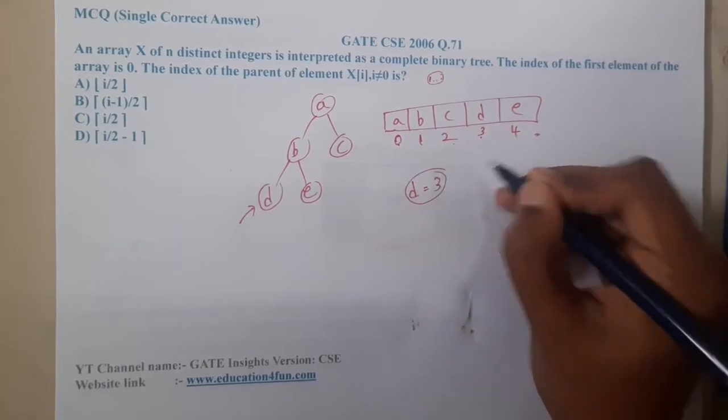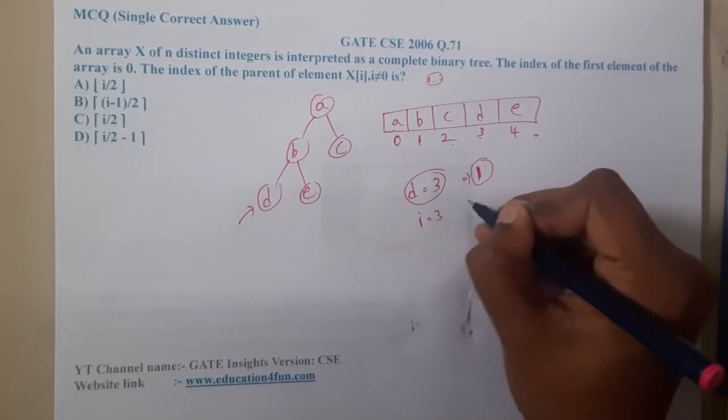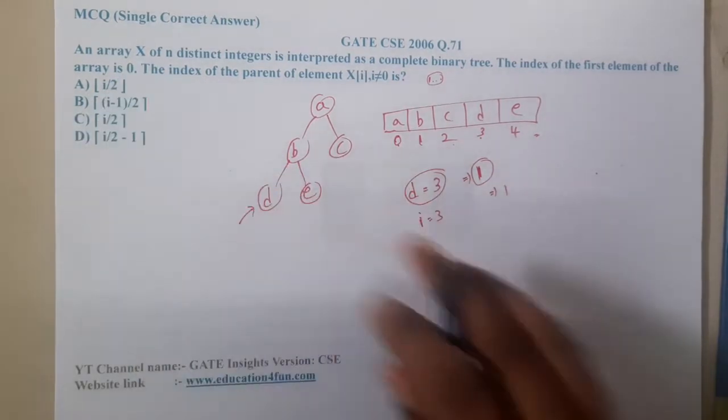Value of d is at 3 and d's parent is at 1. You need to get the answer 1. So if you substitute i equal to 3, you should get a 1. So let us start substituting the values.